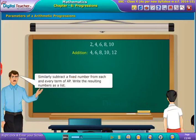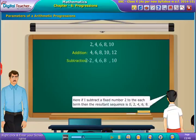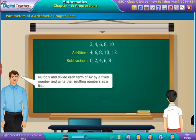Write the resulting numbers as a list. Here, if I subtract a fixed number 2 from each term, then the resultant sequence is 0, 2, 4, 6, 8.